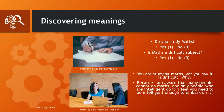Suppose someone who is studying maths and yet tells you yes, it is a difficult subject. You can probe further by asking more questions: why do you say so? You are studying maths yet you say it is a difficult subject — why? The person may answer: because I am aware that many people cannot do maths and only few people who are intelligent do it. I feel you need to be intelligent enough to do mathematics. You can imagine how much more information you get about the meanings that this person attaches to being a student of mathematics, which you don't get from those simple structured questions.